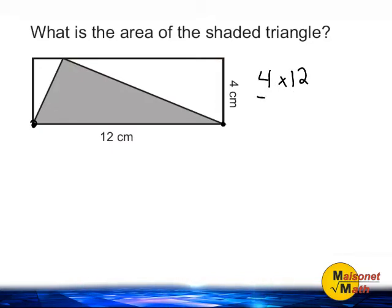But the triangle is going to be exactly half of that, so we are going to divide 48 by 2. And 48 divided by 2 is equal to 24 square centimeters. So we would say the area of our triangle is equal to 24 square centimeters.